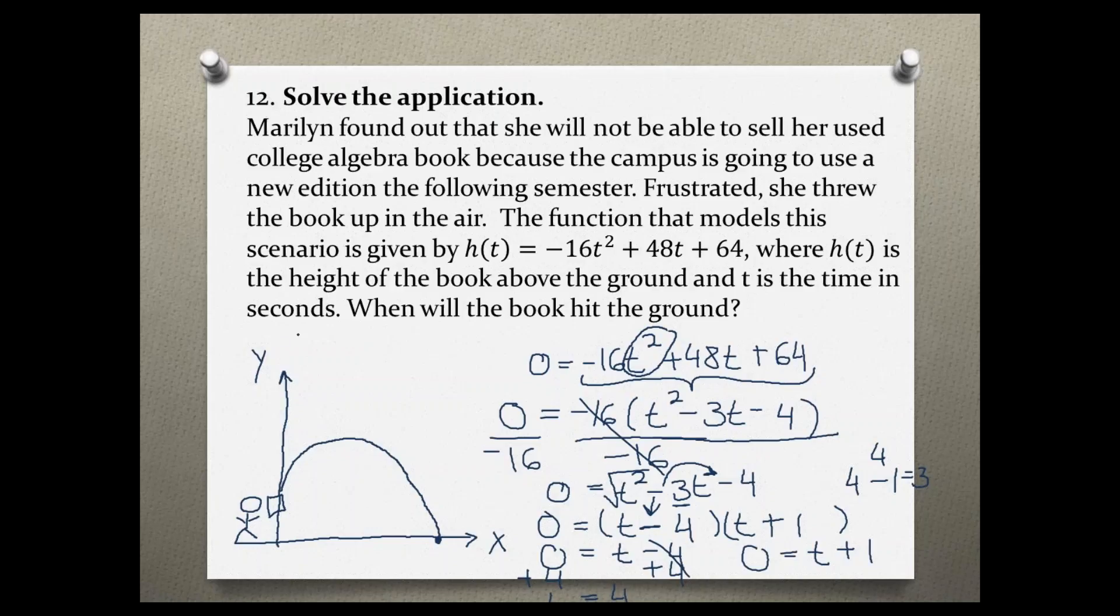Let me write that up here: t equals 4. And then over here we subtract 1 from both sides and we get t equals negative 1.